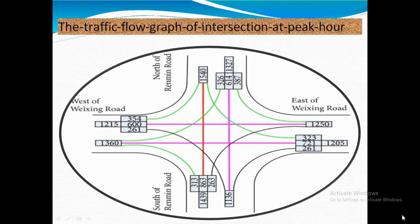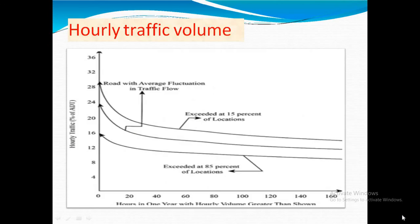This is the traffic flow graph. It shows east of existing road, west of existing road, north and south — which are the traffic flow conditions covered. Here is the vicinity map. This is the hourly traffic flow graph, with hours in one year on the x-axis and hourly volume rate on the y-axis. One road shows average fluctuation in traffic flow, another exceeds at up to 15% of locations, and another exceeds at 85% of locations, representing different traffic conditions.